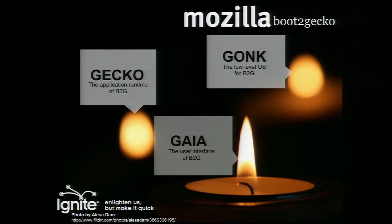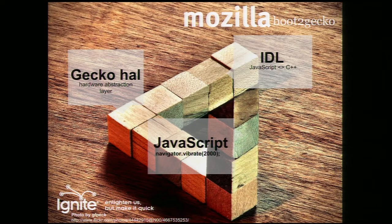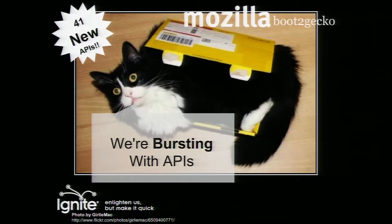The building blocks of Boot to Gecko are three pieces. You have Gonk, which is the Linux part of it. Gecko, our application runtime that provides all the services required by Gaia, which is our user interface. All our interfaces are defined in IDL. From there, we have abstraction layers, both on Gecko as well as on the Gonk layer. And in JavaScript, you simply call the API methods and the other layers take care of the rest.